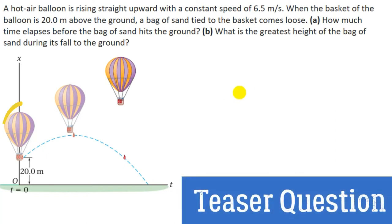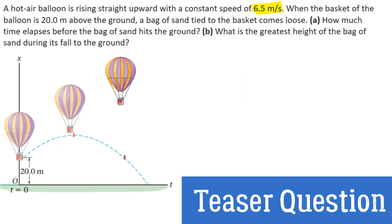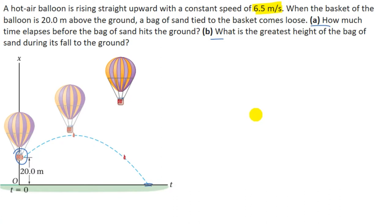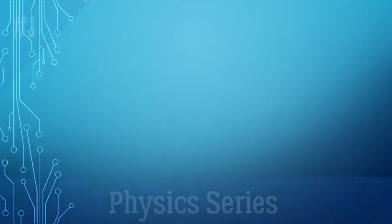Here we are given that a hot air balloon is rising straight upward with a constant speed of 6.5 meters per second. At this position, a sandbag falls which was attached to the hot air balloon. We have to calculate, in part (a), how much time elapses before the bag hits the ground, and in part (b), the greatest height achieved by the bag.